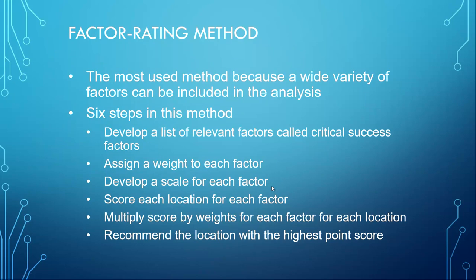The first method is the factor rating method which is considered the most used method because a wide variety of factors can be included in the analysis. There are six steps in this method. The first step is to identify relevant critical or success factors which will assist in the success of the business. Weight will be assigned to each factor. Then a scale will be developed for each factor. The scores of each location for each factor will be provided by historical data and published indexes. Then we multiply the score by the weight of each factor for each location. We recommend the location with the highest point score.